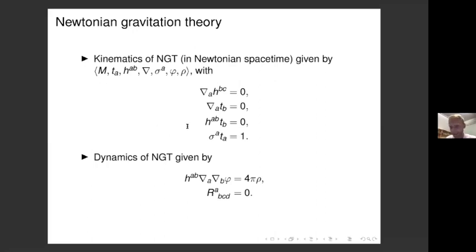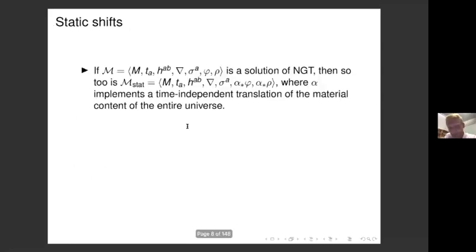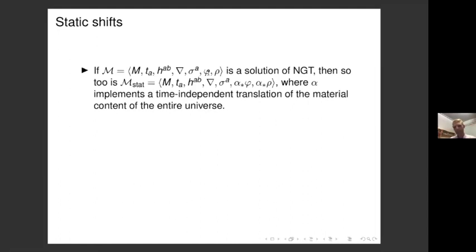All of that should be familiar to those who've looked at the last chapter of Malament — if not, don't worry; we're not going to do too much maths going forward. Now, shifts. In Leibnizian static shifts in Newtonian gravity, if M with the standard structure is some solution of Newtonian gravity, then so is M_stat — the same apart from that I've transformed the material content of the universe by some time-independent translation, e.g. shifting it five meters to the left. That's what we call a Leibnizian static shift.